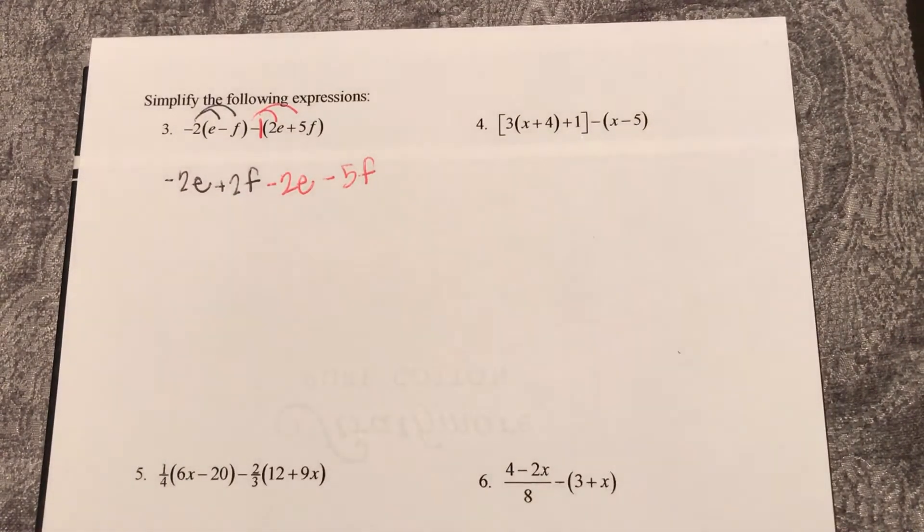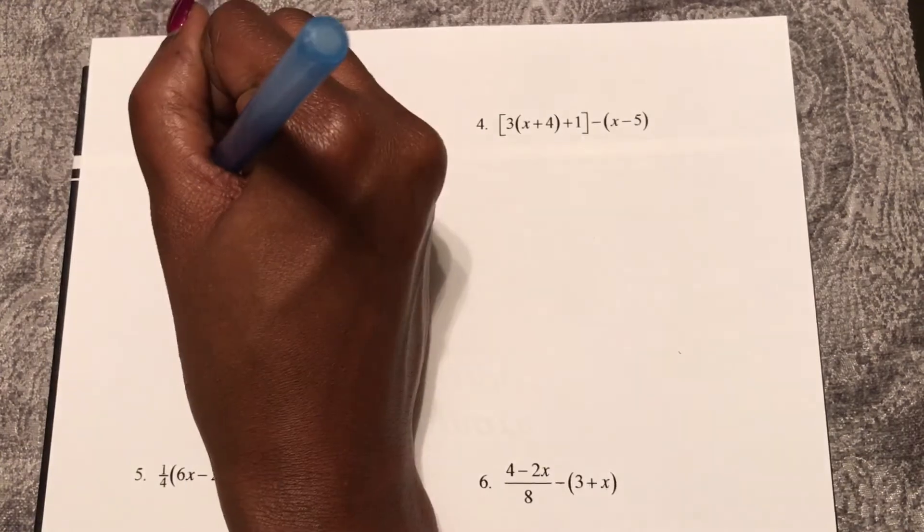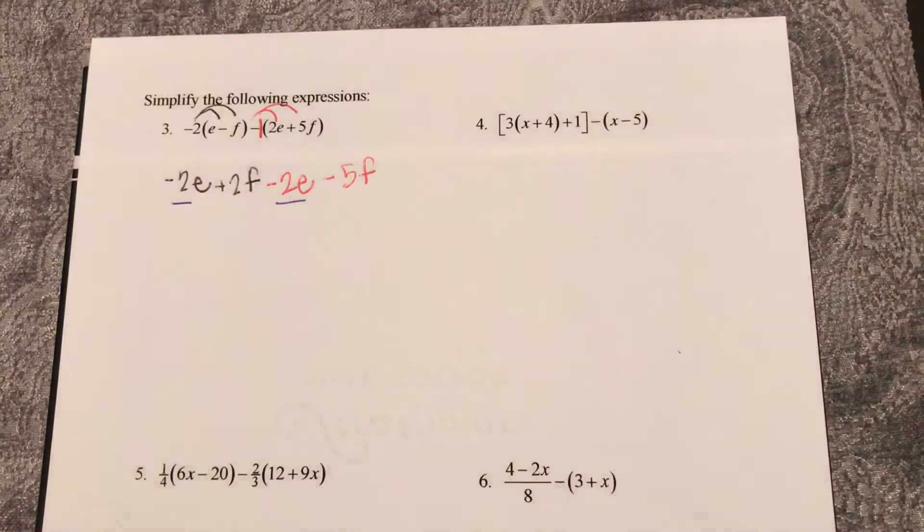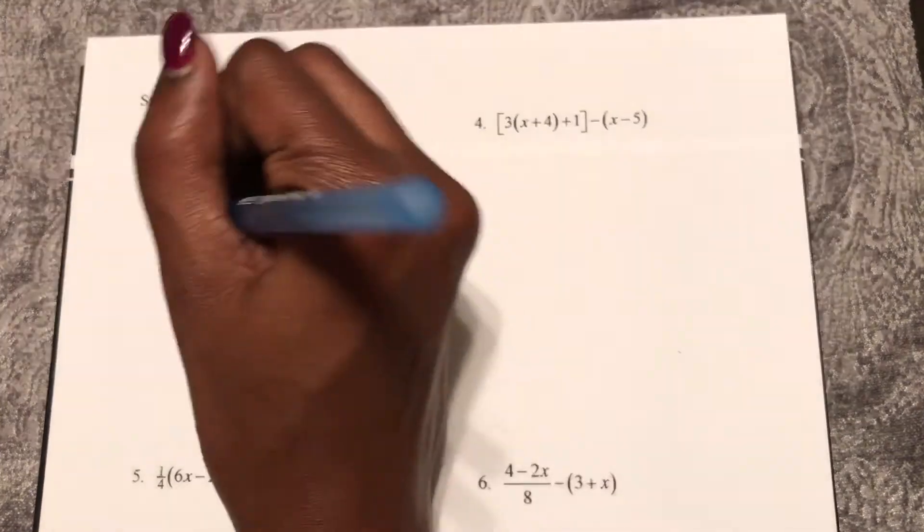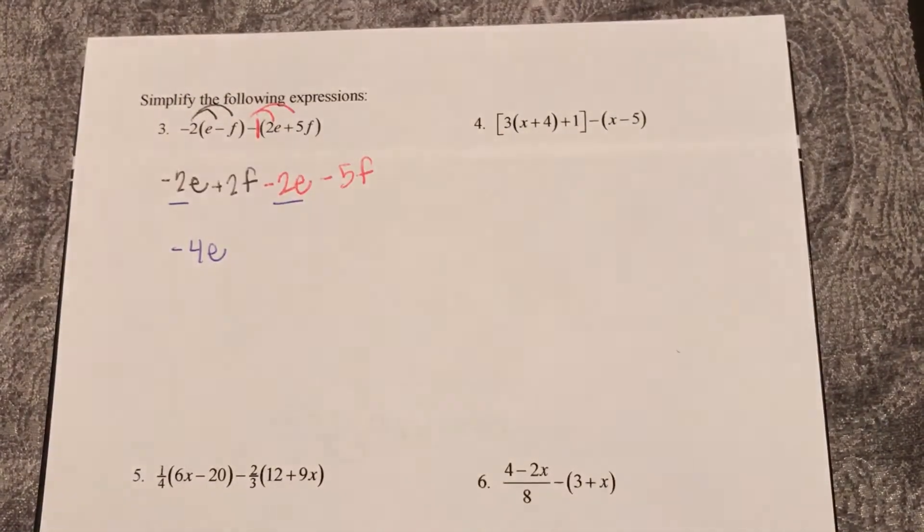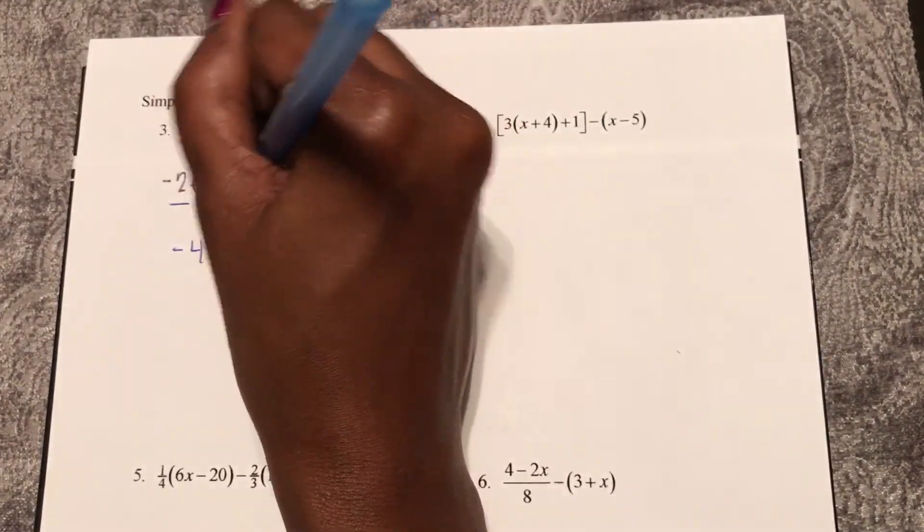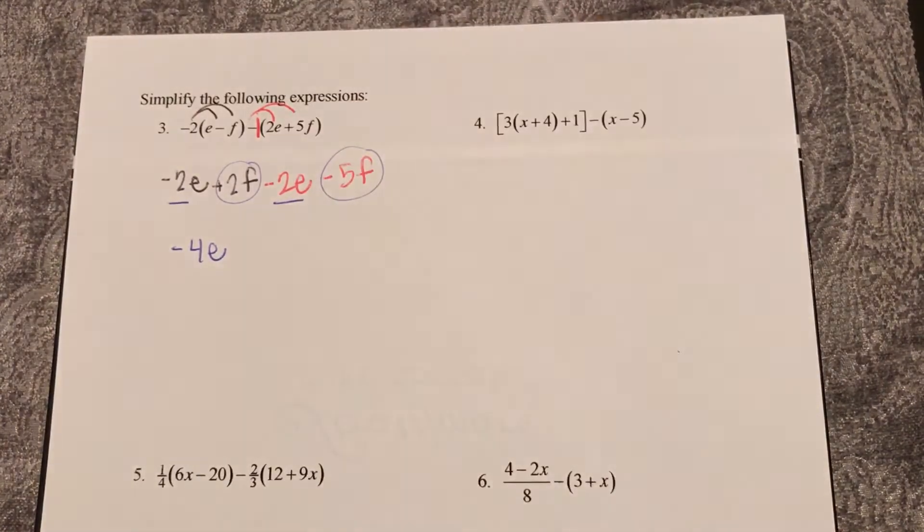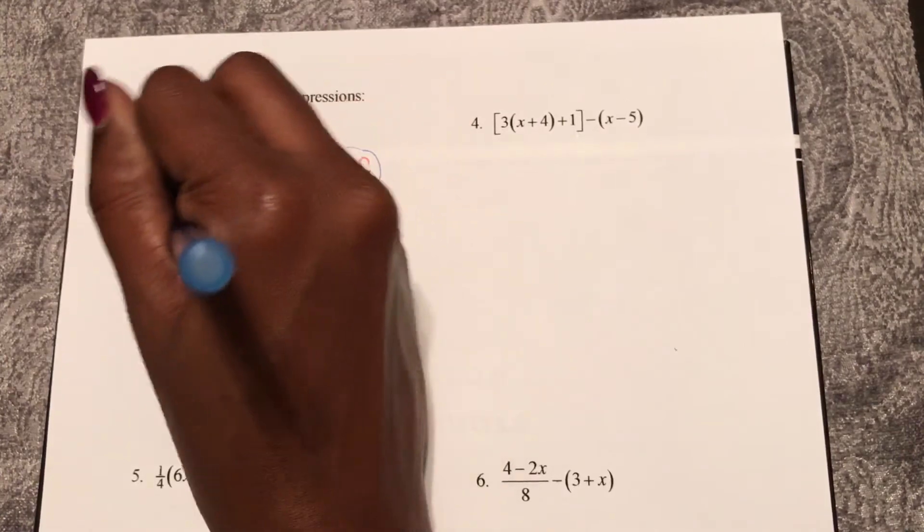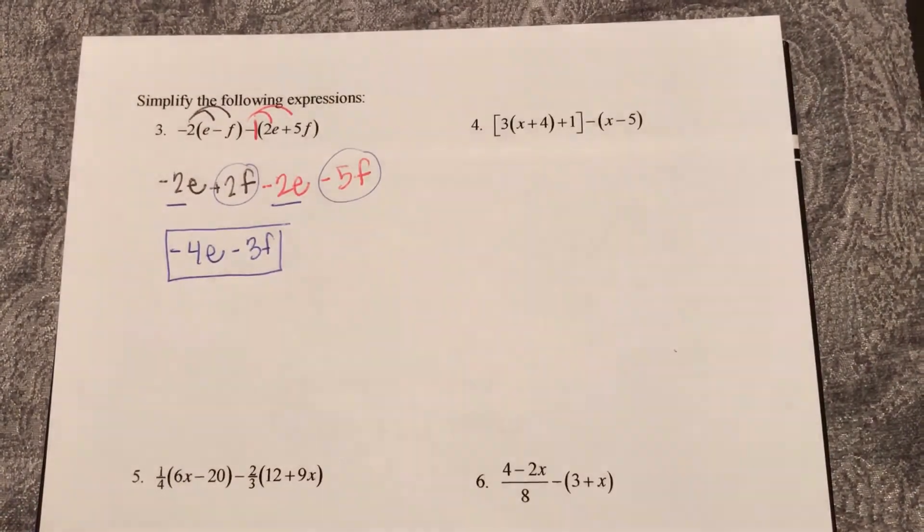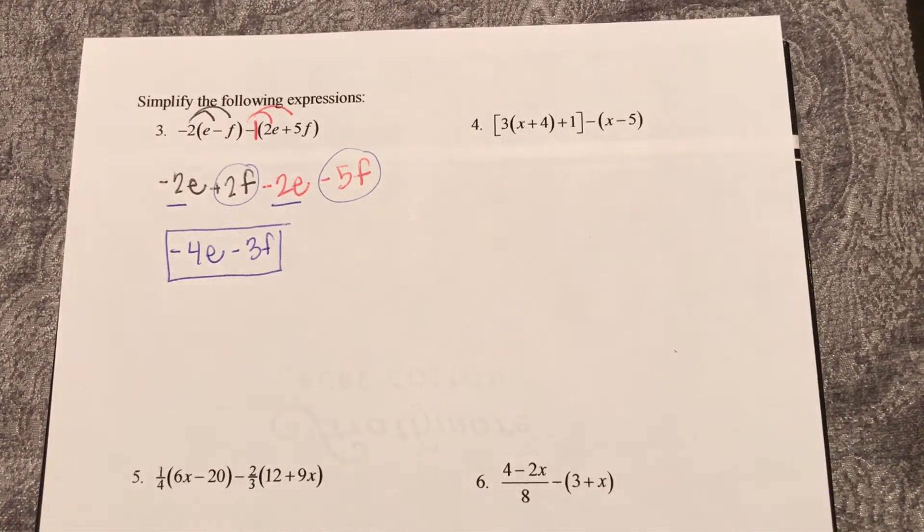Now this expression is more simplified because it does not have any parentheses. Now I will simplify it more by combining like terms. So the first like terms I see are negative 2e and negative 2e. Negative 2 plus negative 2, negative 4e. And lastly, I see 2f minus 5f, 2 minus 5 is negative 3f. So I cannot simplify that expression anymore.